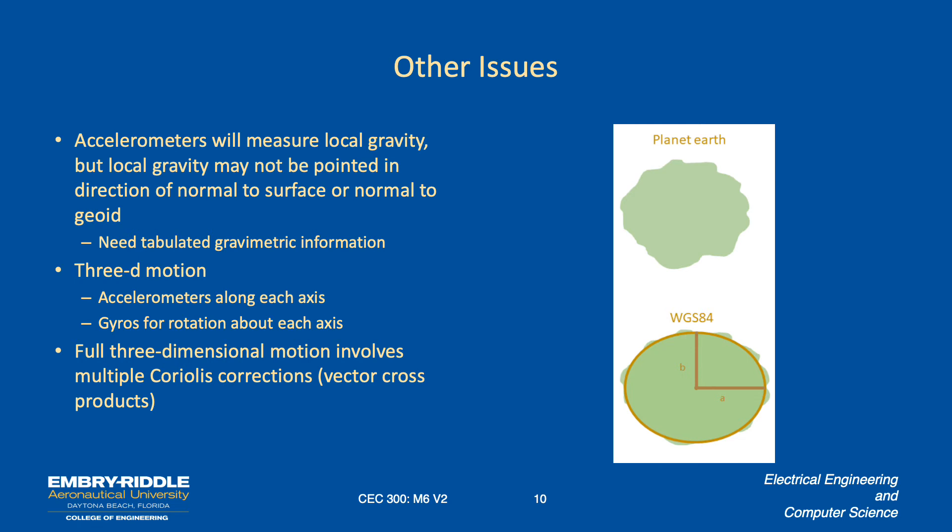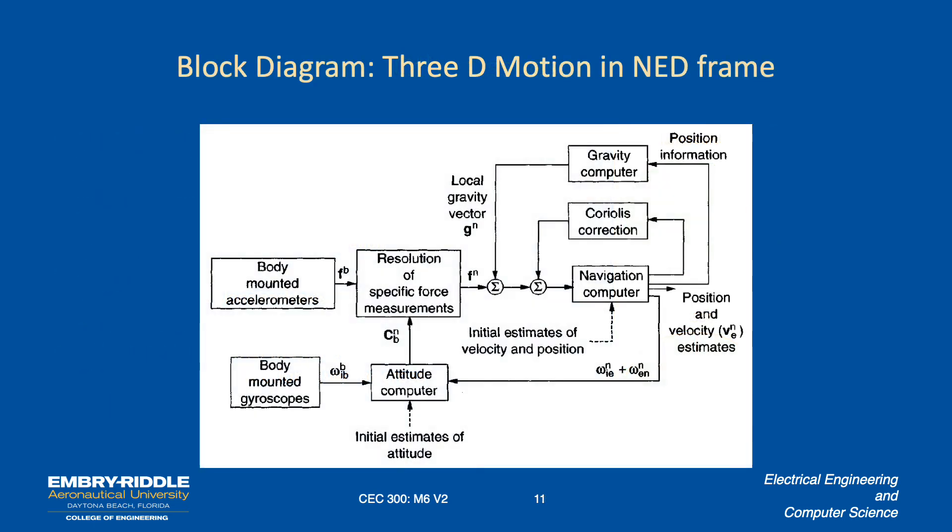And the basic concept, again, is you integrate the acceleration to get the velocity and you integrate the velocity to get the position. So the 3D block diagram here is if you'll start at the very bottom at the initial estimates of the attitude, then you have an integrator. Basically, the attitude computer integrates the measurements from the body mounted gyroscopes with some correction terms regarding Coriolis that come in from what's called the navigation computer.